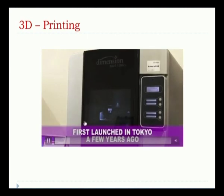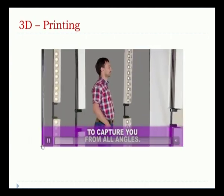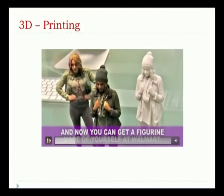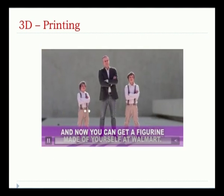This is about general 3D printing — we can use it for multiple industries. First launched in Tokyo a few years ago, the 3D photo booth has a 48-camera setup to capture you from all angles. The cameras take photographs of your own body from different sides, building up your own body image. Mini-moons are quickly spreading around the world — they can get your real image by taking multiple photographs and making a real model out of it. You can even get a figurine made of yourself at Walmart.